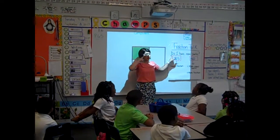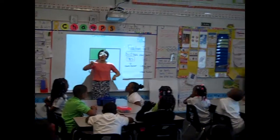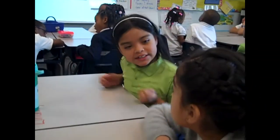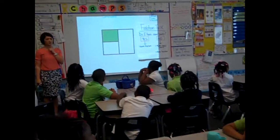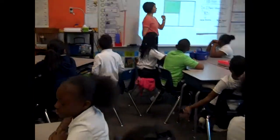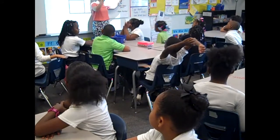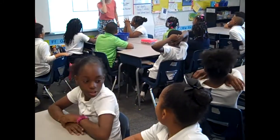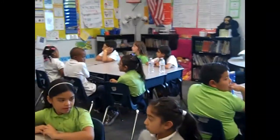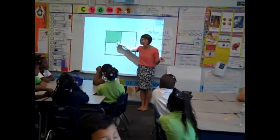So let's take a look at my chart here. Here's the question we have to ask ourselves: do I have equal parts? Partner B, turn to partner A and say, do I have equal parts? Do I have equal parts? On the count of three, I want you to answer my question as a whole group. Do I have equal parts? One, two, three. No! Partner A, turn to partner B and say, we do not have equal parts.